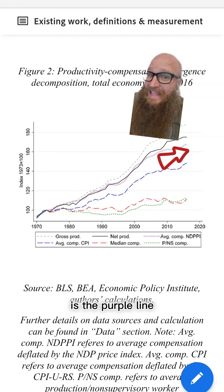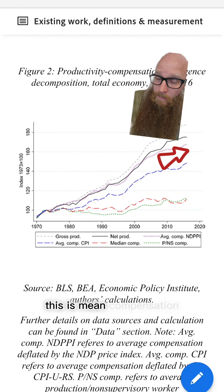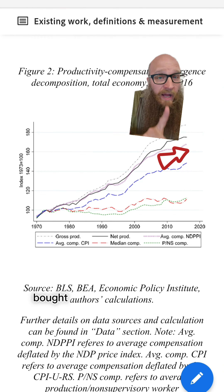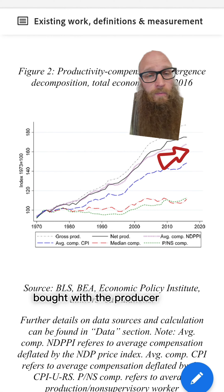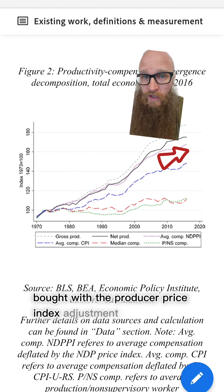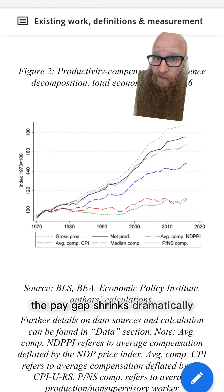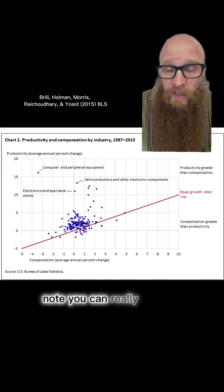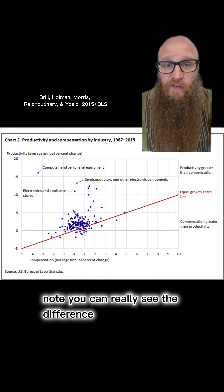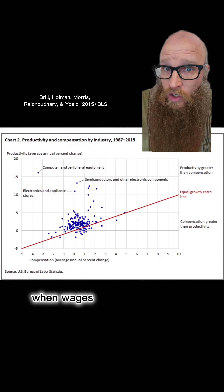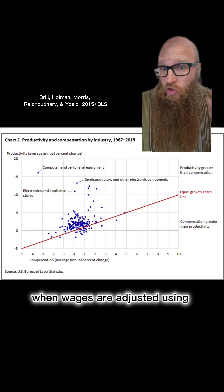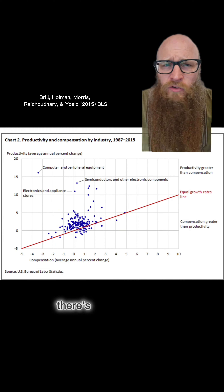The blue line is average compensation. When the mean is bigger than the median, it indicates increased labor inequality. Most interestingly is the purple line — this is mean compensation, but with the producer price index adjustment. The pay gap shrinks dramatically.